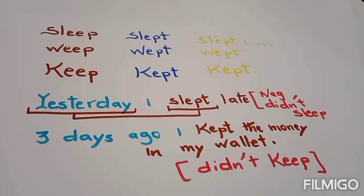I repeat. Sleep, past simple slept, past participle slept. Weep, past simple wept, past participle wept. Keep, past simple kept, past participle kept. Sleep, slept, slept. Weep, wept, wept. Keep, kept, kept.